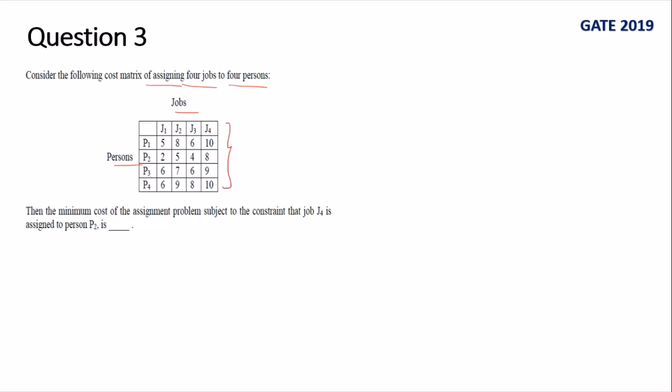When we have 4 persons and 4 jobs, the data is given to us in the matrix. Then the minimum cost of assignment problem subject to the constraint that job J4 is assigned to the person P2 is... That means indirectly they are asking you to solve the assignment problem and we know that how to solve an assignment problem.